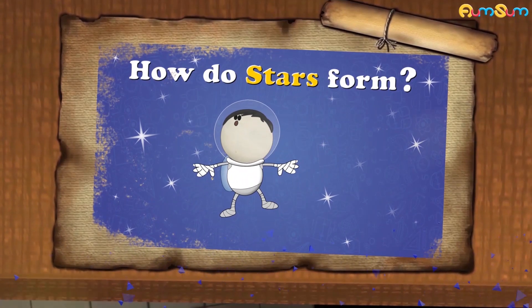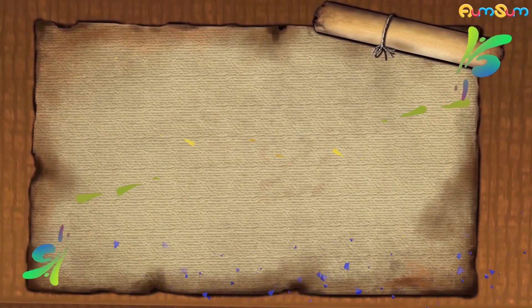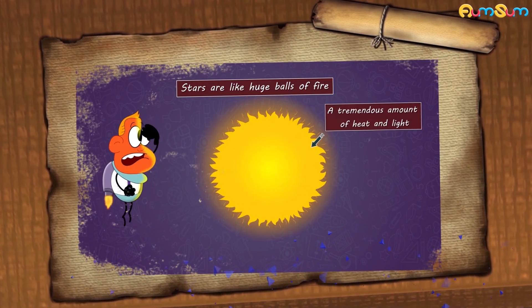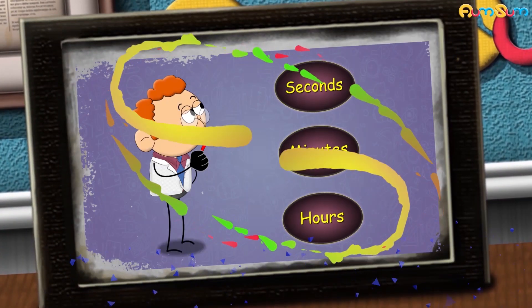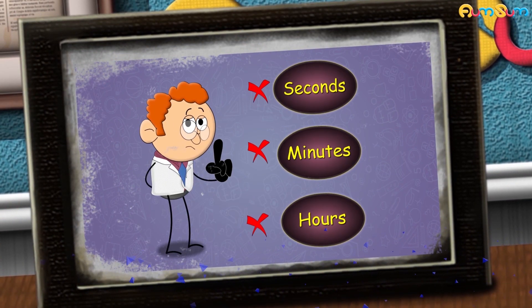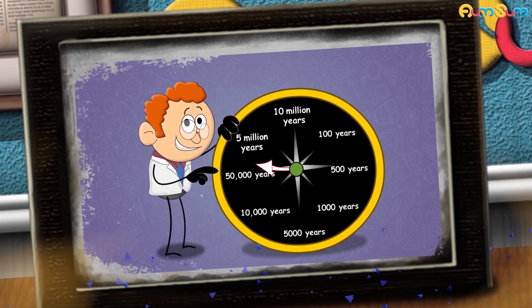How do stars form? Stars are like huge balls of fire that emit a tremendous amount of heat and light. Stars don't form in a few seconds, minutes or hours. Star formation process is so slow that it can take millions of years.